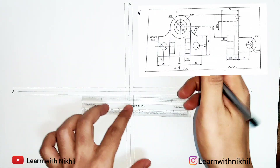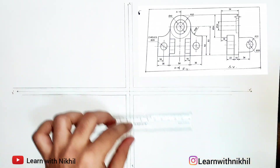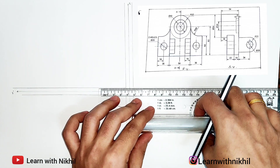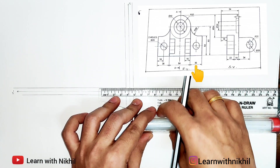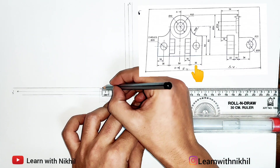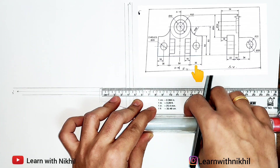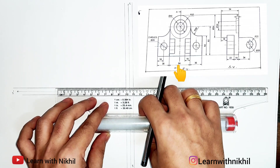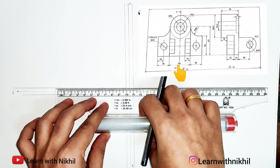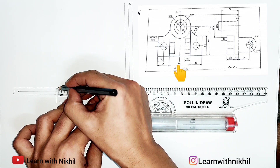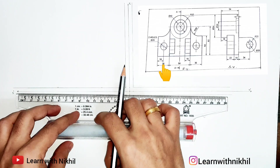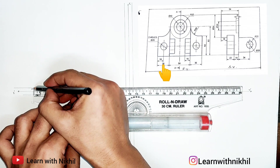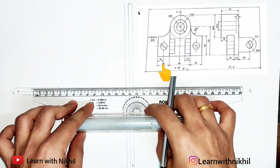Now to start with the front view, this side will be the front view. We will start marking the width first: 36 millimeters, so this distance is 36. After that, from 36, a distance of 64 millimeters — this is the 64 millimeter point. Then from that, again a distance of 36 millimeters. So this gives a total of 137 millimeters.